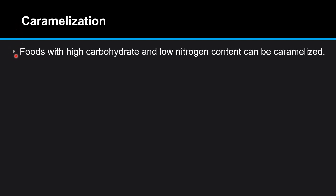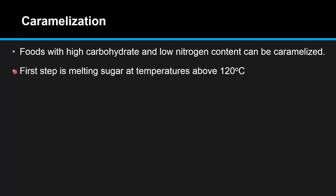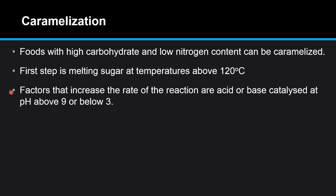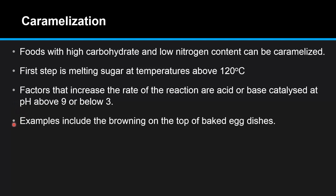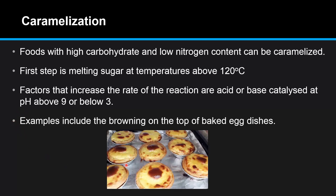The next example of non-enzymatic browning is caramelization. Foods with high carbohydrate and low nitrogen content can be caramelized. The first step is melting the sugar at temperatures above 120 degrees C. The factors that increase the rate of reaction are acid or base catalyzed — at a pH above 9 for a base or below 3 for an acid. Examples include the browning on the top of baked egg dishes, and here is an example of caramelization in a baked egg dish.